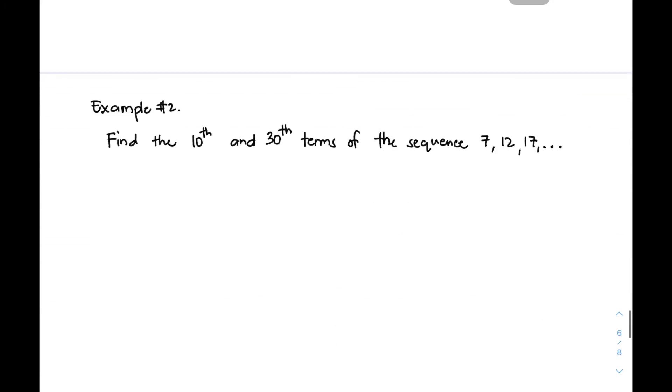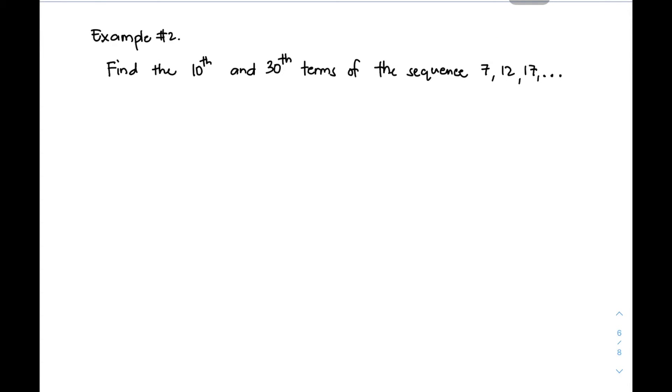Let's move on to item number 2. This one is quite different from the first because in our example number 2, find the 10th and the 30th terms of the sequence 7, 12, 17. Ibig sabihin, since pinapahanap sa atin yung 10th and 30th term, dalawang solution ang gagawin natin. So, let's find the a₁₀ or the 10th term. The formula is aₙ = a₁ + (n-1)d.